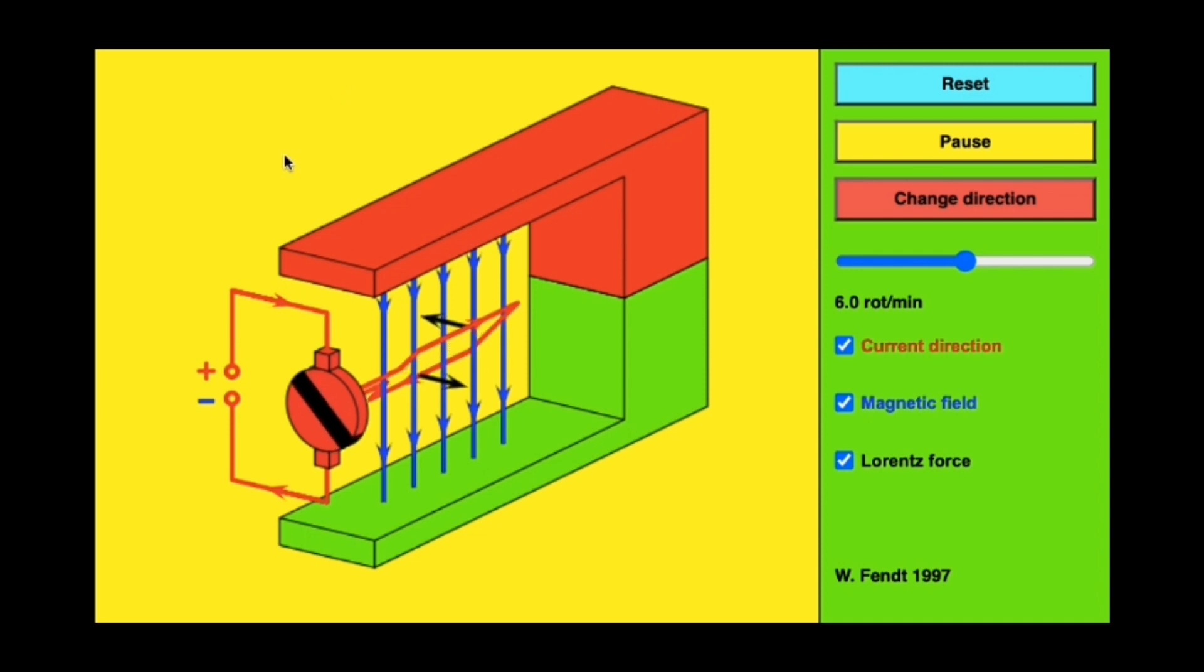You can see that this starts with a source of direct current, most often a battery which forces current to flow from the positive terminal to the negative terminal.